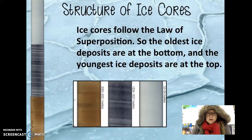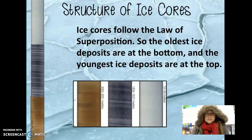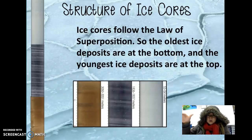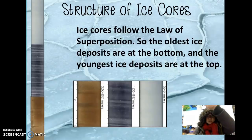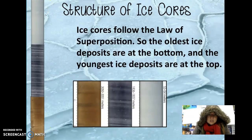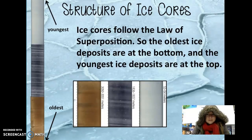Ice cores follow the law of superposition, which we know from studying geology. That means the oldest layers are going to be at the bottom and the youngest layers at the top — the same as for ice. Snow gets deposited, more snow falls on top, so you have the oldest ice at the bottom and the youngest ice at the top.